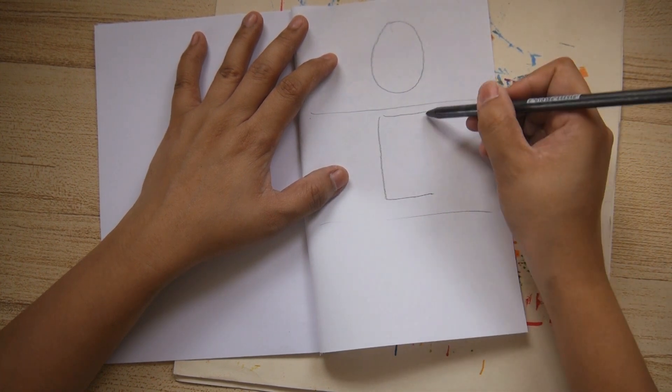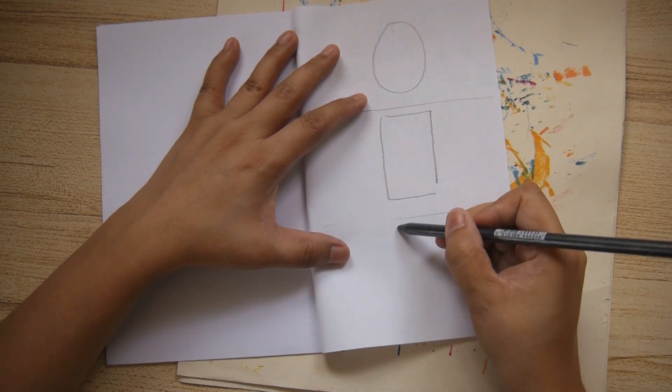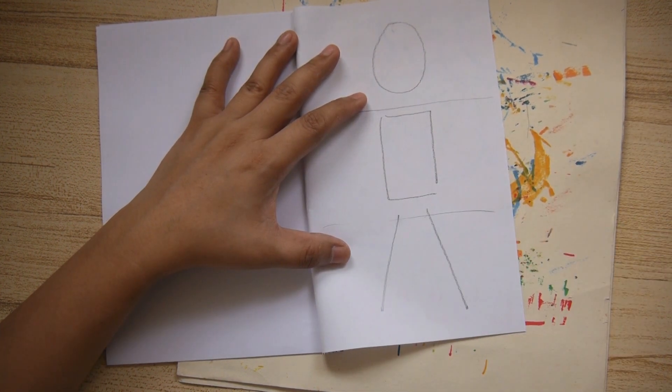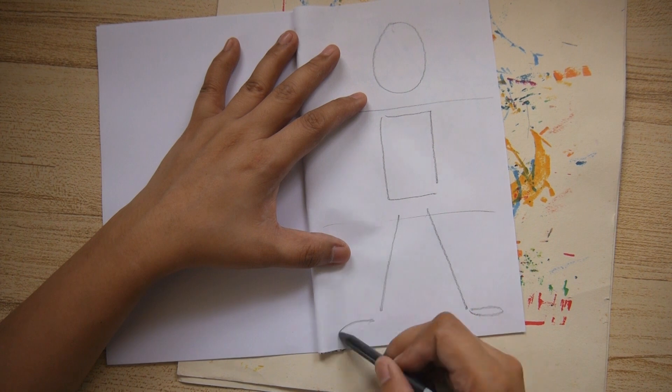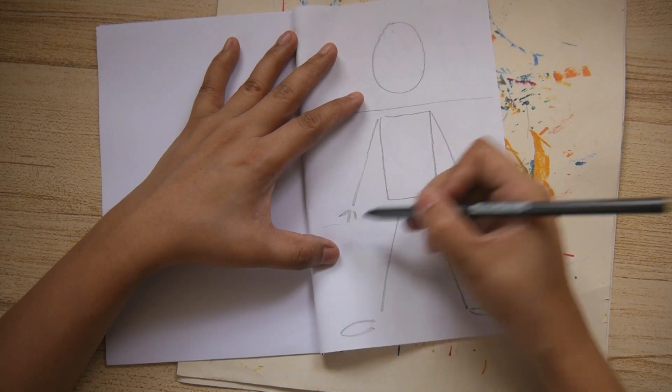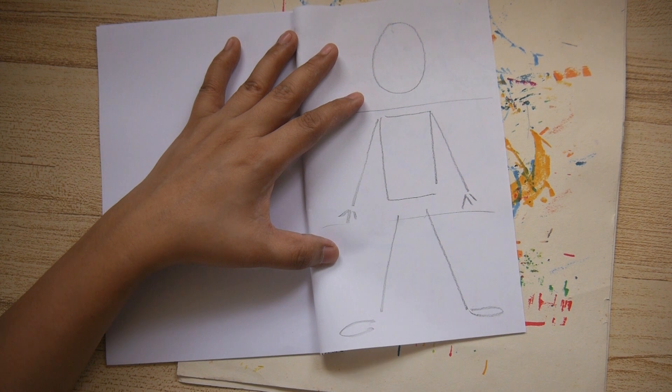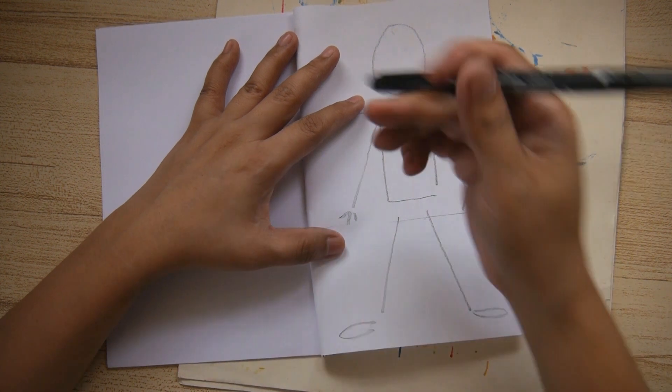The second part has a rectangle. That's going to be the body. And the third one is going to have the legs and the feet. Now do you notice how they're all made up of shapes? This is how artists draw. They first look at the shape of the object that they're drawing.